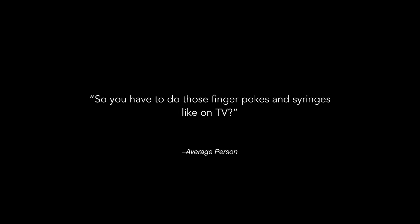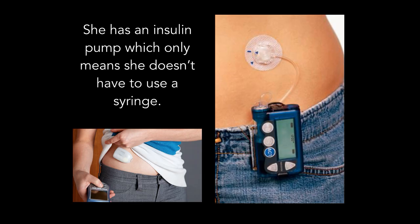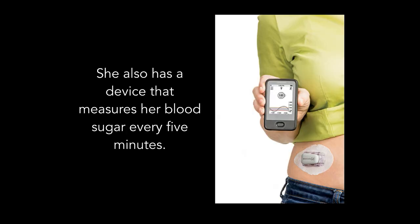And then you get a remark like, 'Oh, she has an insulin pump — I've heard about those.' Yes, she has an insulin pump, which means she doesn't have to use a syringe. And she has a really cool device that measures her blood sugar every five minutes, so she doesn't do as many finger sticks as she used to.